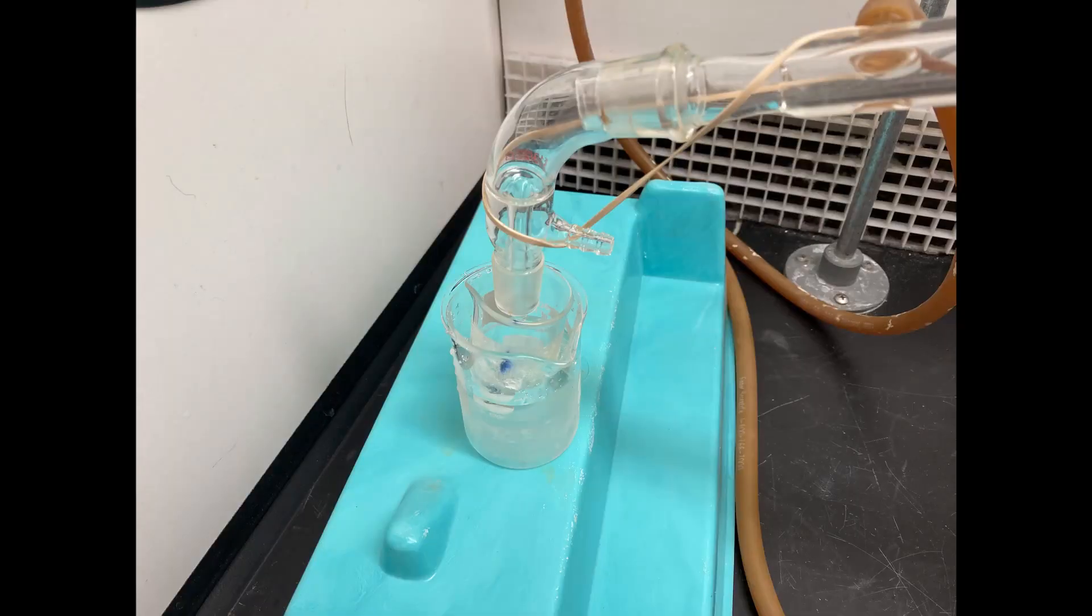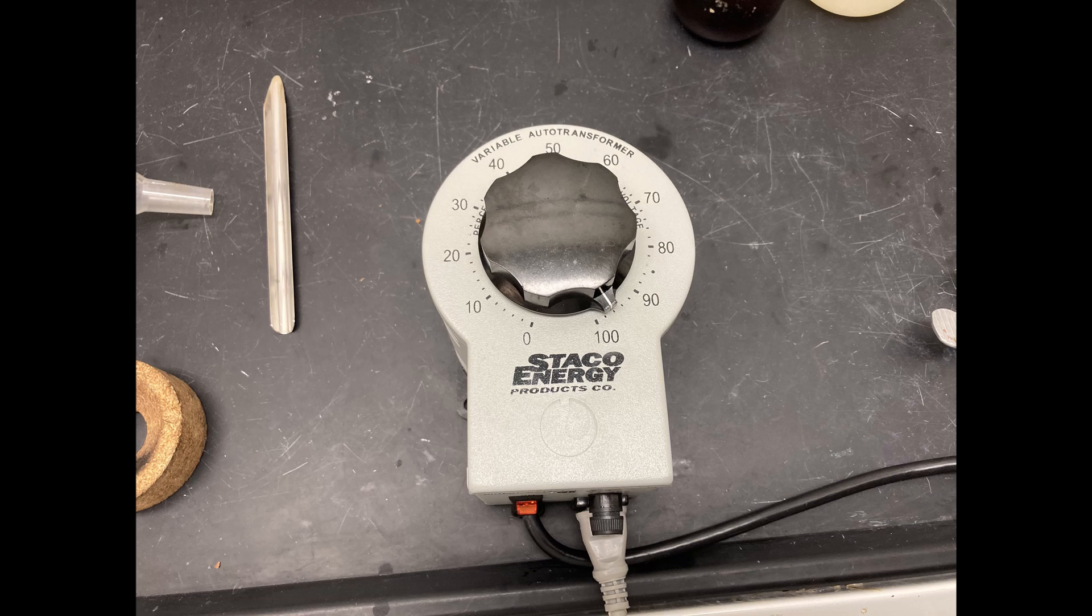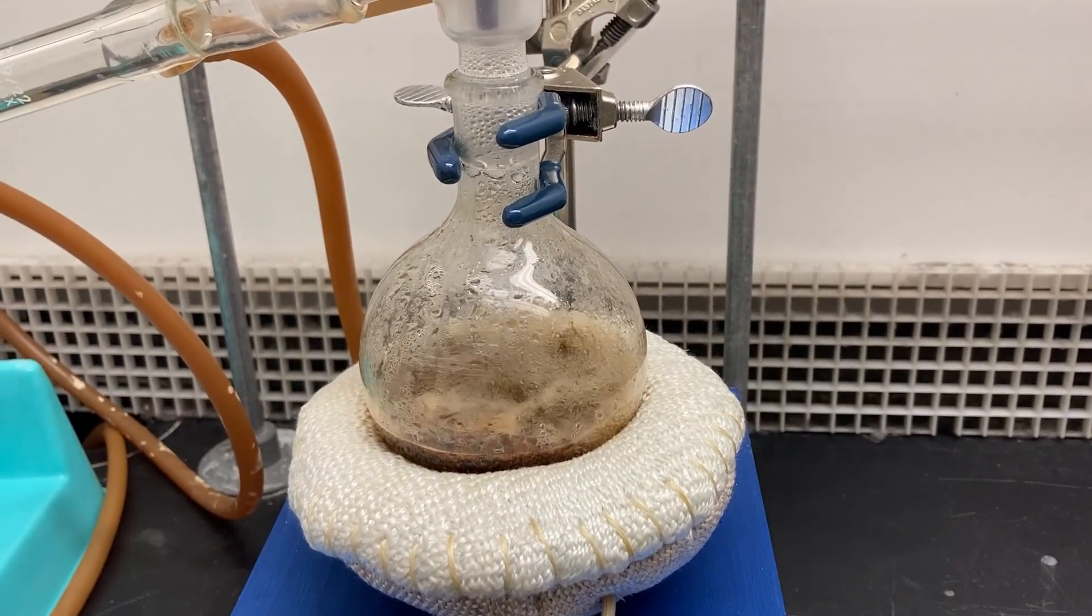Make sure your distillate is collecting in a beaker placed in an ice water bath. Set your variacs to between 95 and 100%. Your distillation should come to a boil after about 10 or 15 minutes of heating.